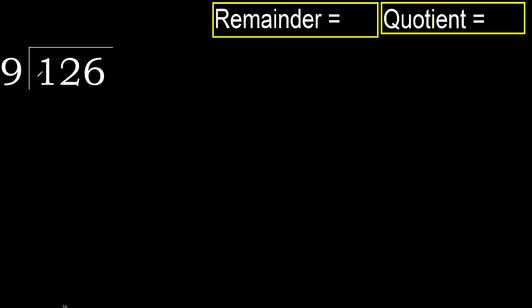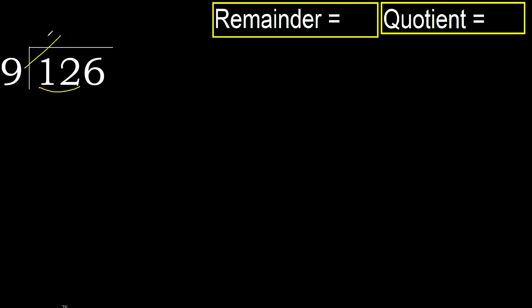176 divided by 9. 1 is less than 9, therefore move to the next digit. 17 is not less than 9, therefore with 17, find which number multiplied by 9 is nearest to 17 but not greater.